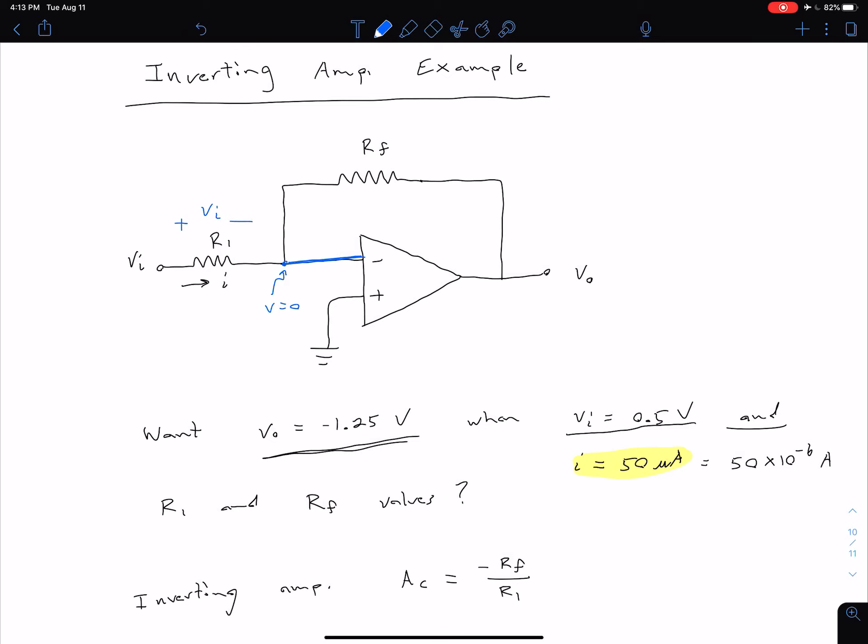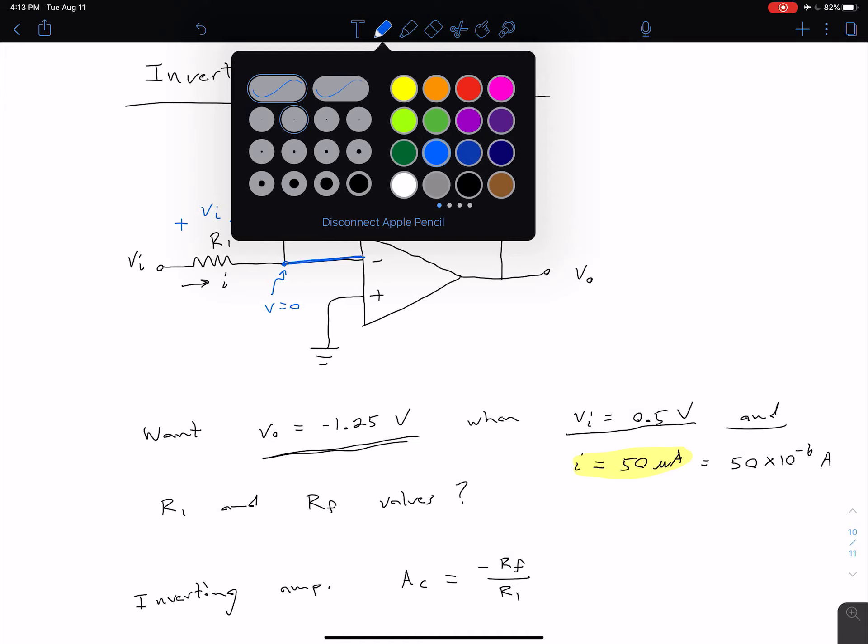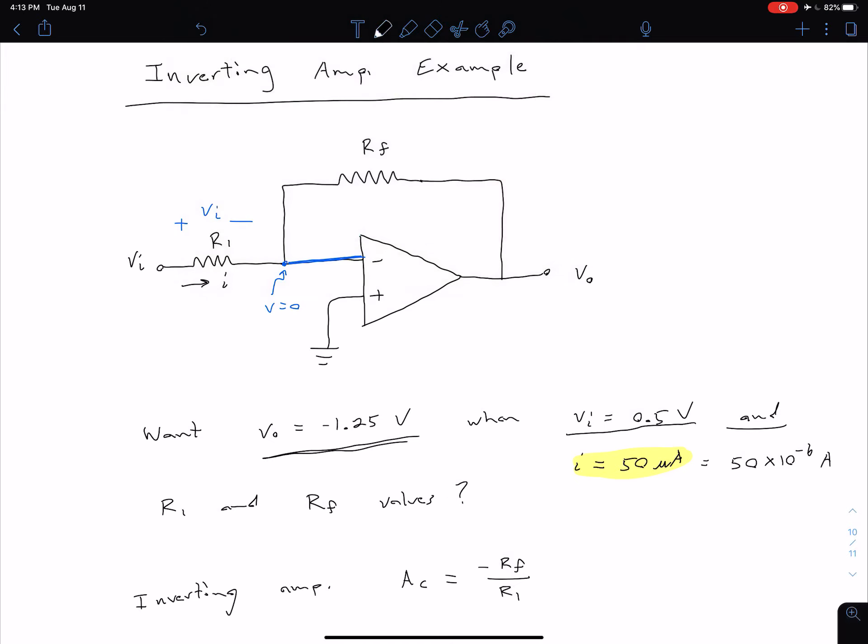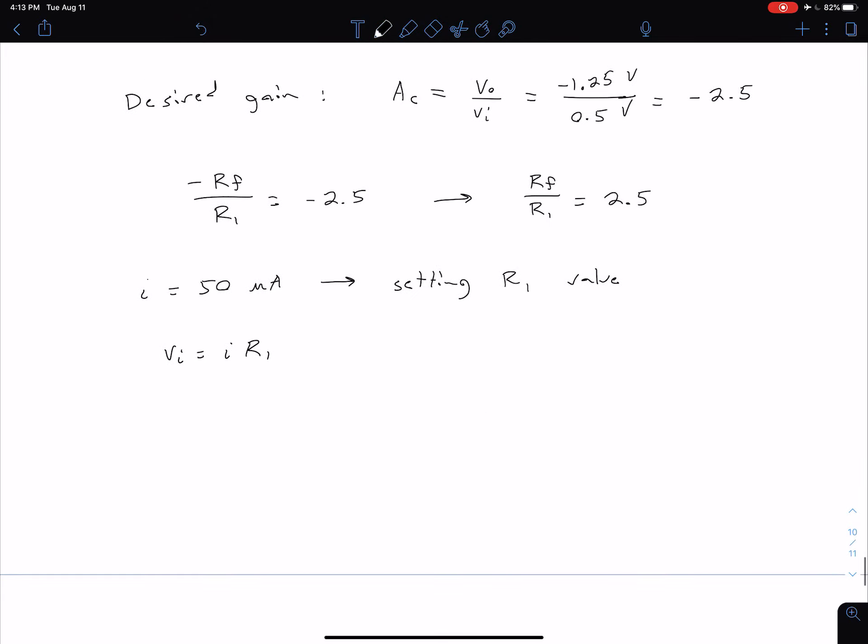So using Ohm's law, then, we just have that that current is equal to V, or the voltage is equal to I times R, which is what we have here.